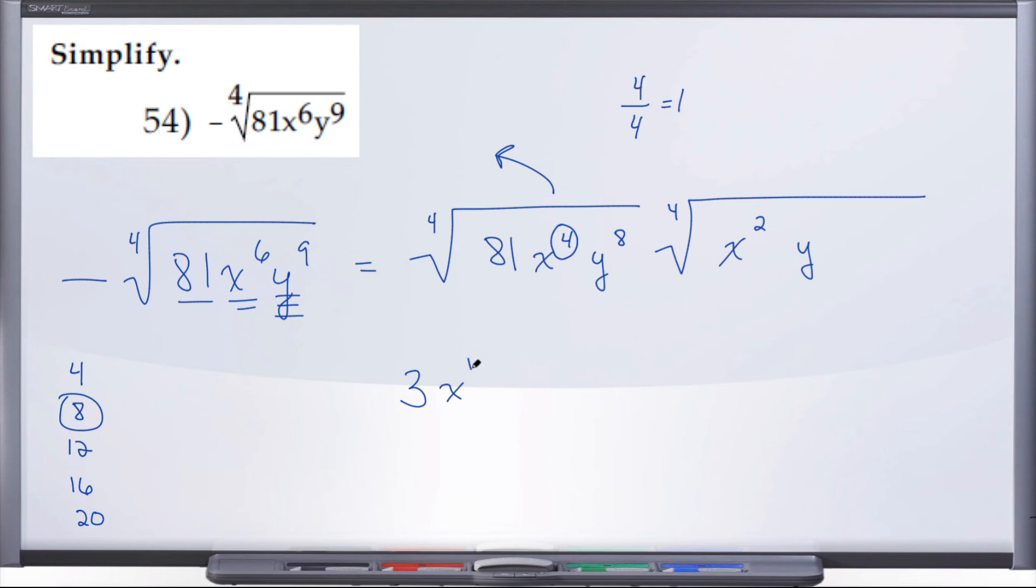And then what about y to the eighth? Well, we know it's going to come out as a y, but what is its power, its exponent going to be? Well, just like before, we're going to take the exponent, divide it by the root. Eight divided by four gives us two.